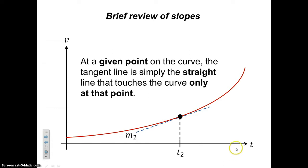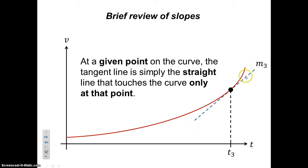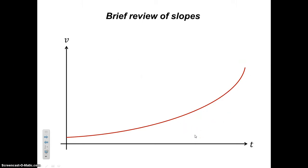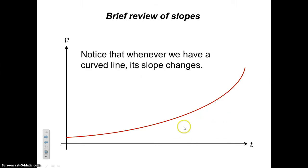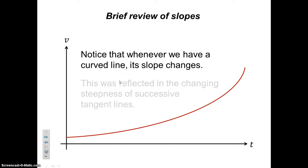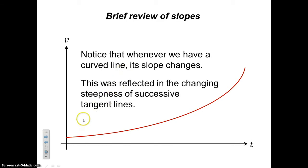We're going to do it one last time for a third point. There's the tangent, there's its slope — that's equal to the slope of the curve at this particular point. We noticed that whenever we have a curved line, the slope is changing, reflected in the changing steepness of successive tangent lines: the first was not so steep, the next was steeper, and the last was even steeper.